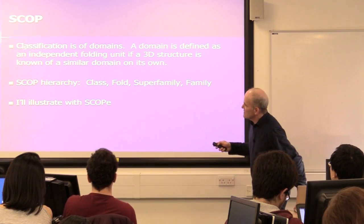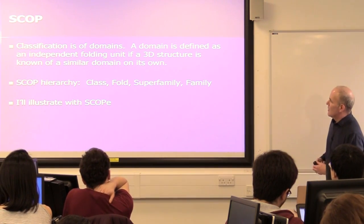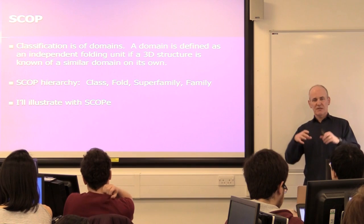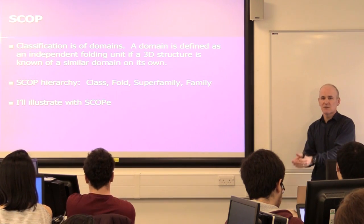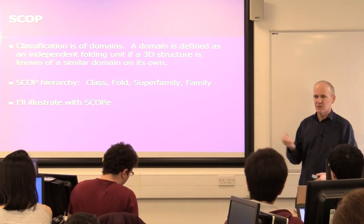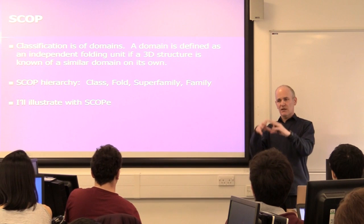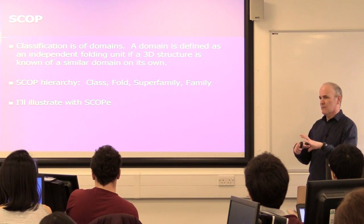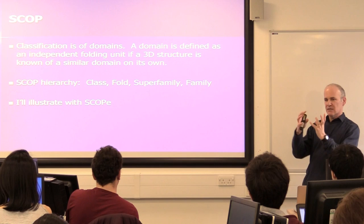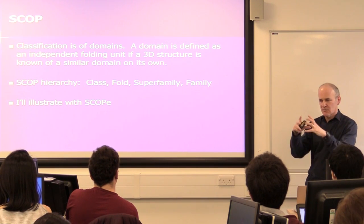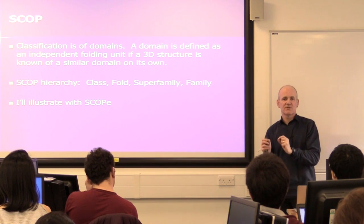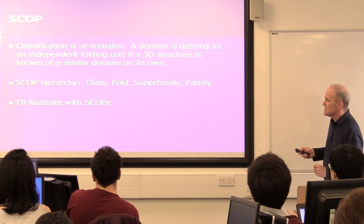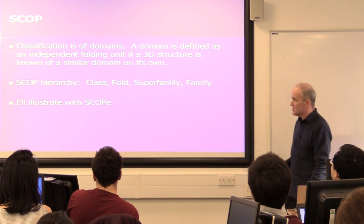SCOP is a classification of three-dimensional structural domains. A domain in SCOP is defined as an independent folding unit — essentially a bit of protein that will fold up into a three-dimensional structure stably on its own. SCOP only defines a domain if that domain has been seen experimentally on its own somewhere. CATH does not make that requirement — it looks for domains that are globular units within a protein structure, not necessarily ever seen independently. SCOP's hierarchy is: class, fold, superfamily, family.